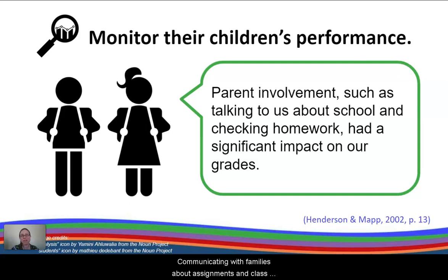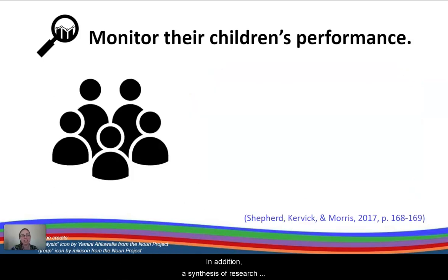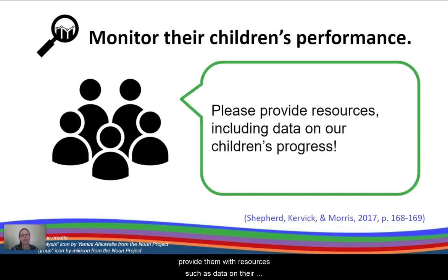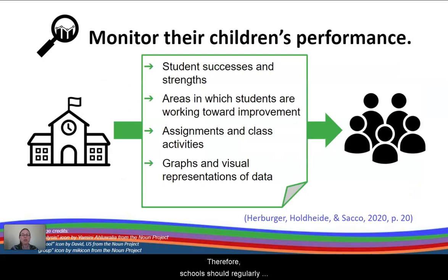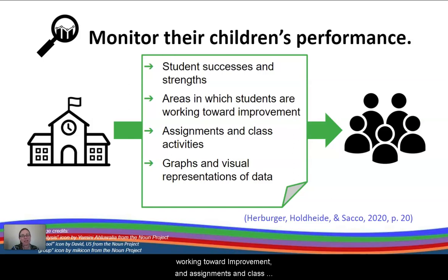Communicating with families about assignments and class activities empowers them to better initiate conversations with their children and monitor their performance. A synthesis of research projects and interviews with families of children with disabilities revealed that parents want educators to provide them with resources, such as data, on their children's progress. It's difficult for them to monitor their child's performance without this information. Therefore, schools should regularly communicate with families regarding student successes and strengths, areas in which students are working toward improvement, and assignments and class activities, as well as provide data about student performance using visuals and explanations that families can understand.